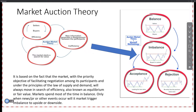The only thing that matters when you're in the market auction is whether the price is being accepted or rejected. If people are accepting a price at a certain level and they're willing to pay that price, the price is most likely going to search higher. If the price is being rejected, we're not liking the price at this level — so what is the price going to do? It typically sells off in search of buyers.